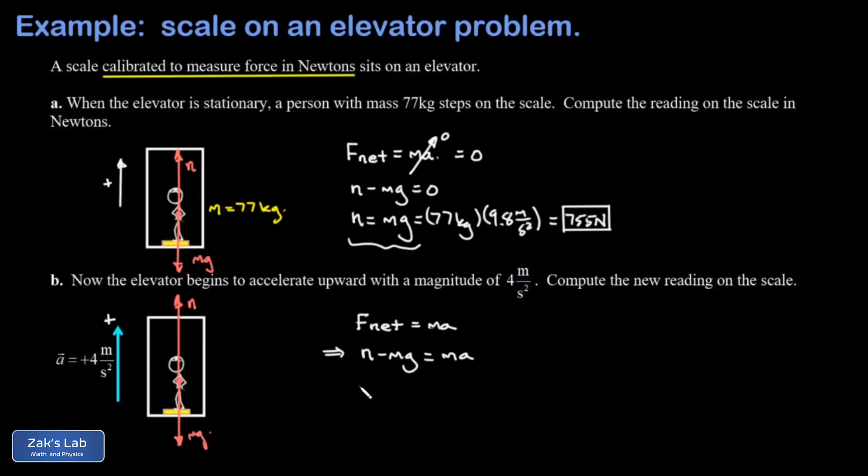So this time when I solve for normal force, I get mg plus ma, and I'm going to factor an m out of that. I get m times the quantity (g plus a). We can plug in our 77 kilograms, g is 9.8 meters per second squared roughly, and our acceleration is 4 meters per second squared.